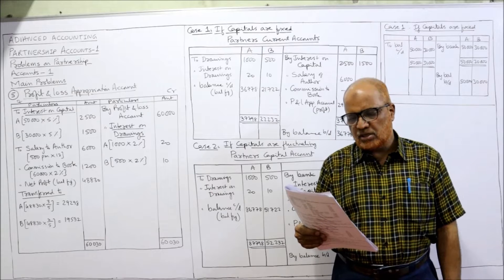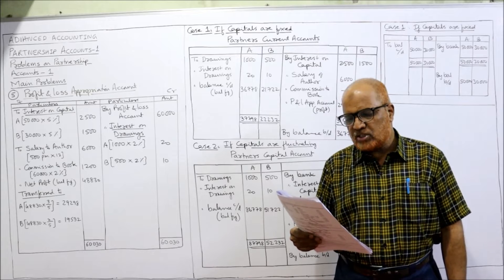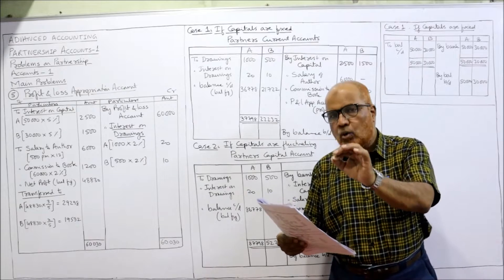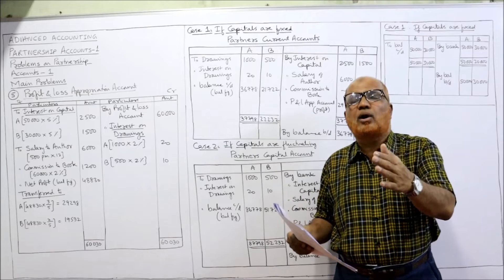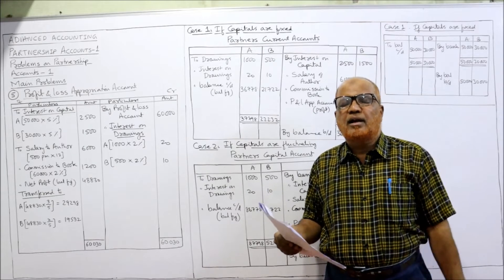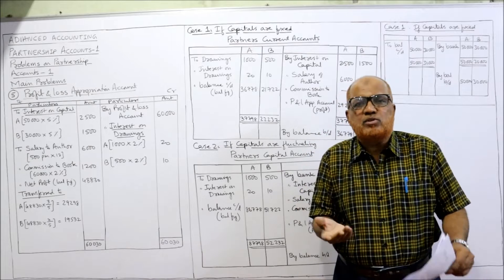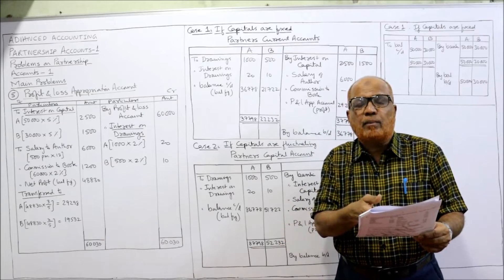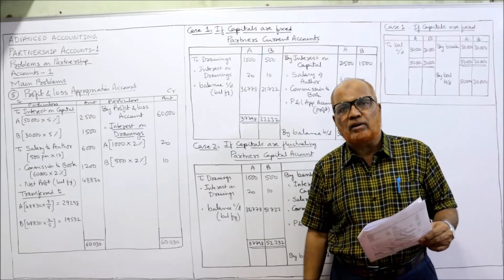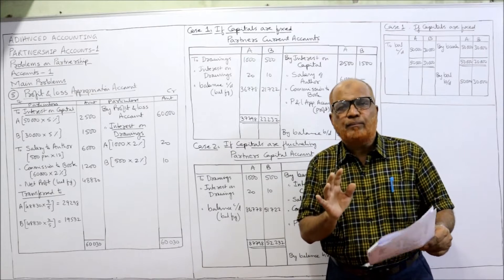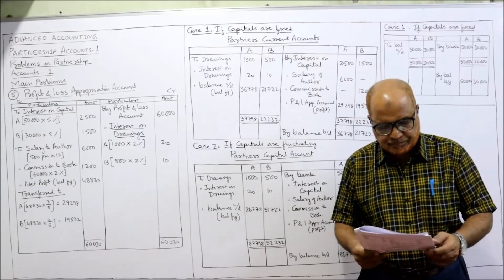On 31st December 2005, their trading profits before giving effect to the above terms was 60,000. During the year, Mr. Author has withdrawn 1,000 and Mr. Book 500 from the firm, on which interest is to be charged for the whole year. Remember, if this is not given, we would assume drawings were made in the middle of the year and calculate interest for six months. Since it is specifically given that interest on drawings is to be charged for the full year, we do not multiply by 6/12.